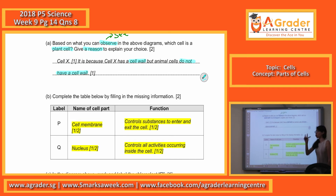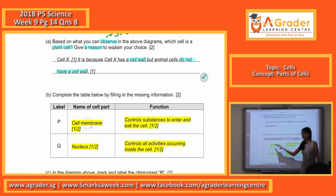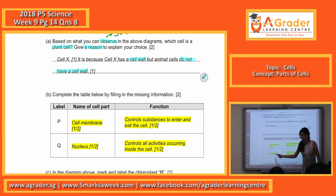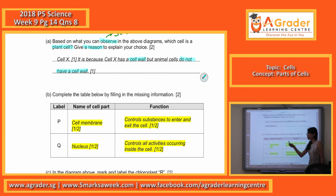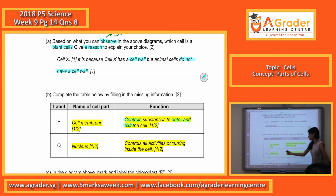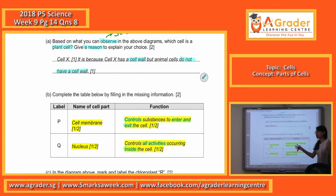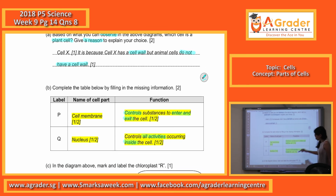Just write down the main function — one function. So P is the cell membrane, Q is the nucleus. The key word for cell membrane is: it controls anything that is moving in and out of the cell. The nucleus controls all the activities inside the cell. Take note — nucleus is for anything within the cell; cell membrane controls things going in and going out. Just remember: nucleus is like your brain, cell membrane is like your door.